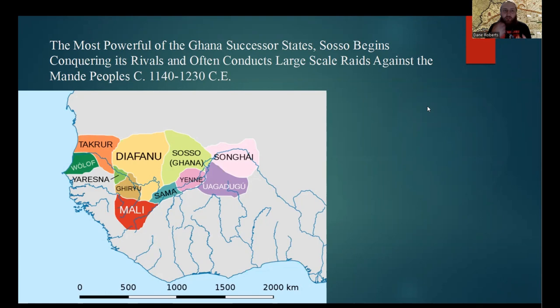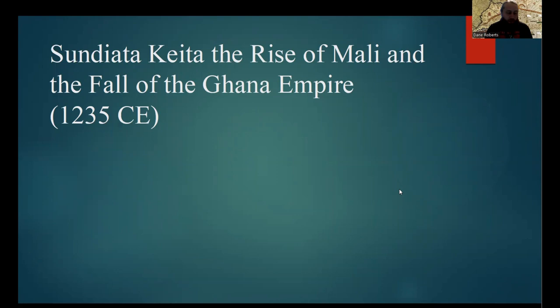As the Ghana Empire began to fracture into various successor states, eventually the most powerful of these — possibly the Ghana Kingdom itself depending on your perspective — So-so would begin to conquer or reconquer its rivals, including Tak Roar, Dion Phu, and the southernmost successor kingdom, Mali, which had already begun to have a closer relationship with the Mande tribes peoples. This brings us to the meat of our video: the rise of the Mali Empire, the fall of what was left of the Ghana Empire, both connected to the rise of a certain individual by the name of Sundiata Keita.